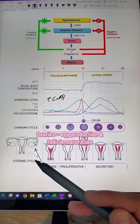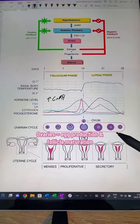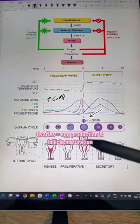Our ovaries down here are the site where eggs are produced, and they contain many, many follicles each month. Some mature, but only one ovulates.